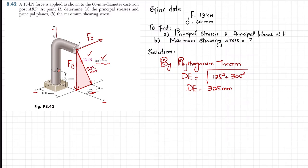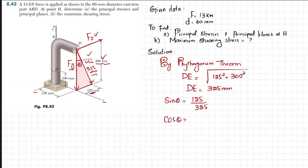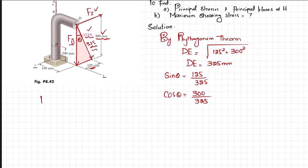The force F of 13 kilonewtons has two components Fy and Fz. It makes an angle theta with the vertical axis. Sin(theta) equals 125 over 325, and cos(theta) equals 300 over 325.